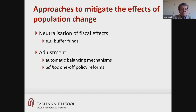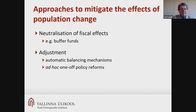The other principal approach is to adjust social policies to accept population change and accommodate policies to the changing circumstances. From the field of pensions, there are examples such as automatic balancing mechanisms like linking pension age to life expectancy. But in many other domains, such adjustments and accommodations are still mostly ad hoc, one-off policy reforms. And adjustment to population aging remains one of the key policy challenges in the current era.